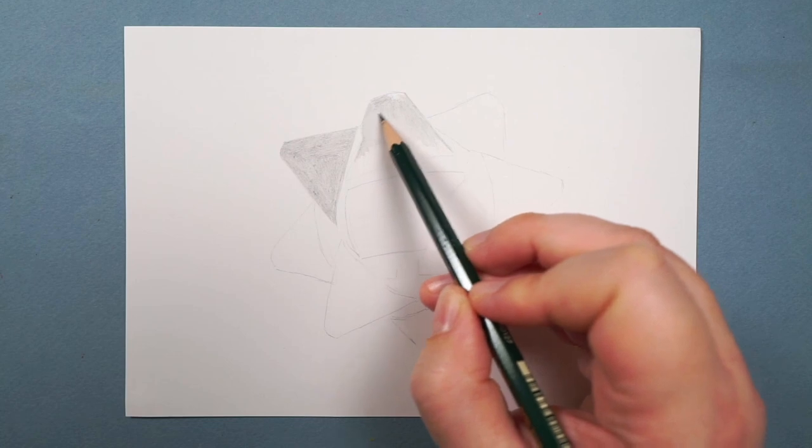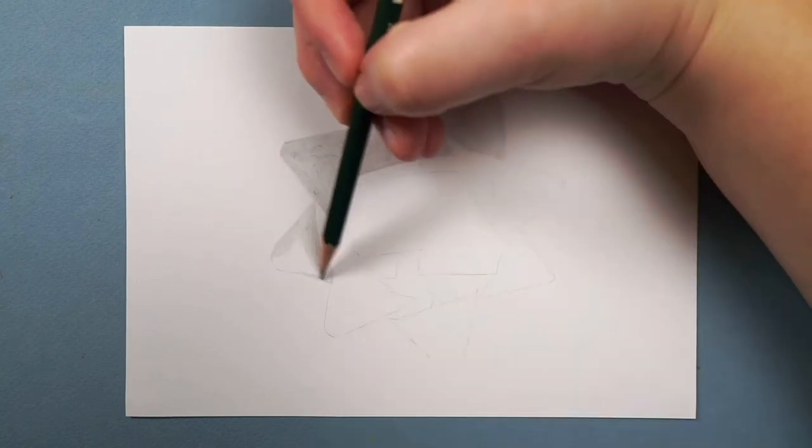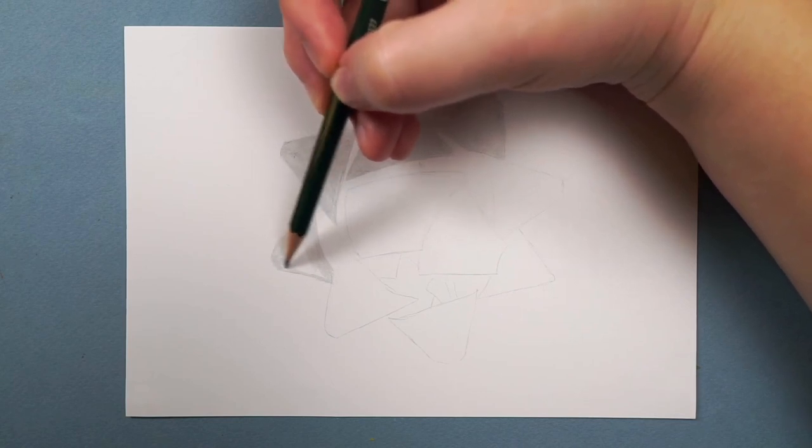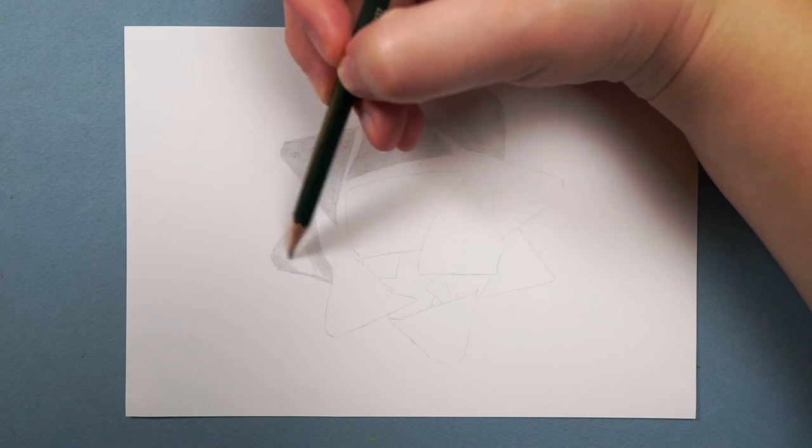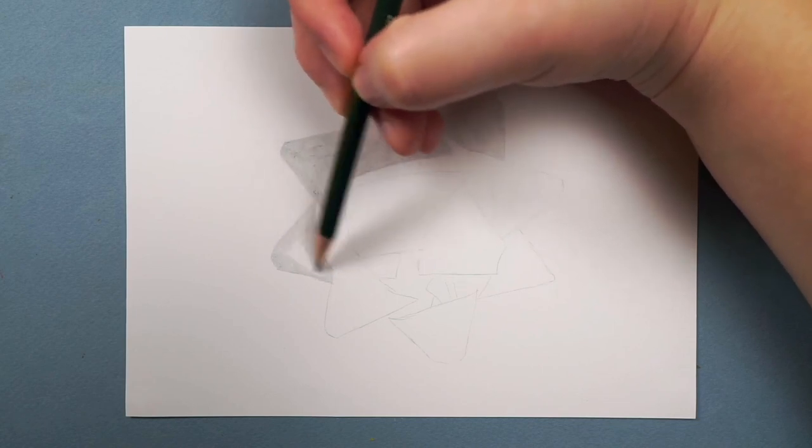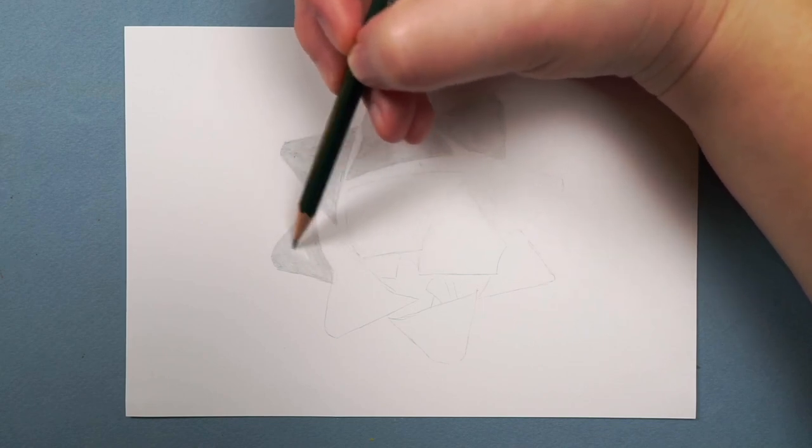There are a few things I can do to help myself get smooth even coverage. First up, I want to be pressing very lightly with the pencil. To help me do this, I'm holding the pencil much further back than you would imagine. You'll see here that I'm holding it about halfway down the pencil. That literally stops me from being able to press too hard.